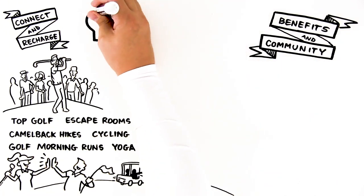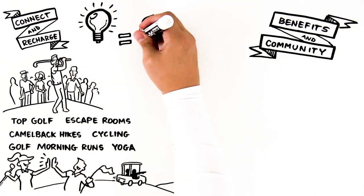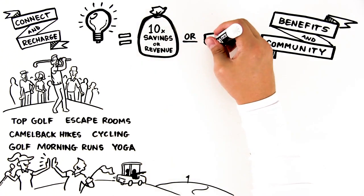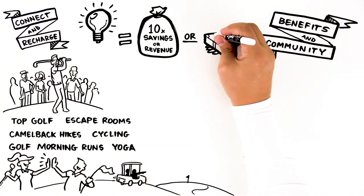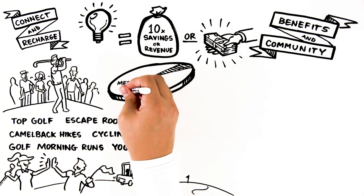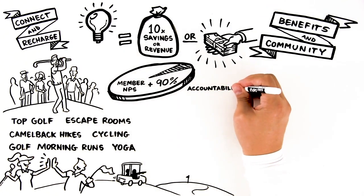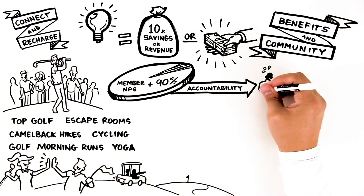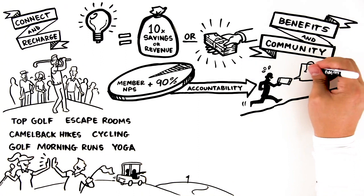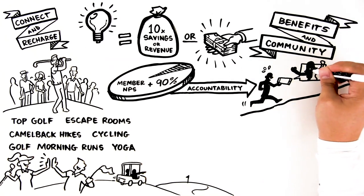Since day one, we've told members that they'll leave with ideas that are worth 10x their investment in either savings or new revenue, or we'll give them their money back. No one has ever taken us up on it. Our members' NPS hovers around 90% at each event. We've built out an accountability component to the COO Alliance, so now members push each other throughout the year to put their ideas into action.